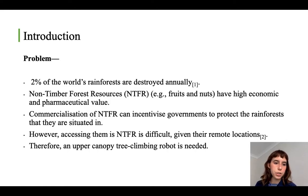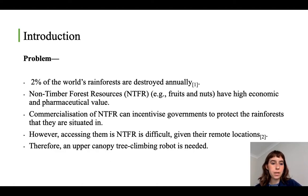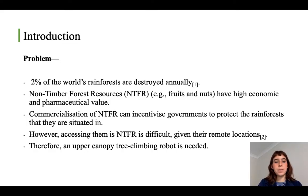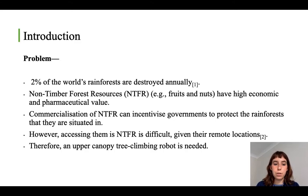As background to the project, the problem is that 2% of the world's rainforests are destroyed annually for reasons including agriculture expansion. Within the rainforest there are non-timber forest resources — for example fruits and nuts — which have high economic and pharmaceutical value. Commercializing those resources can incentivize governments to protect the rainforest from deforestation. The problem is that accessing those resources is difficult because they're in the remote upper canopy, so a tree-climbing robot is needed.